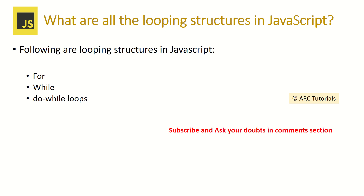What are the looping structures in JavaScript? There are three types of loops you can use: a for loop, a while loop, and a do-while loop. Using these three looping structures, we can implement looping in JavaScript.